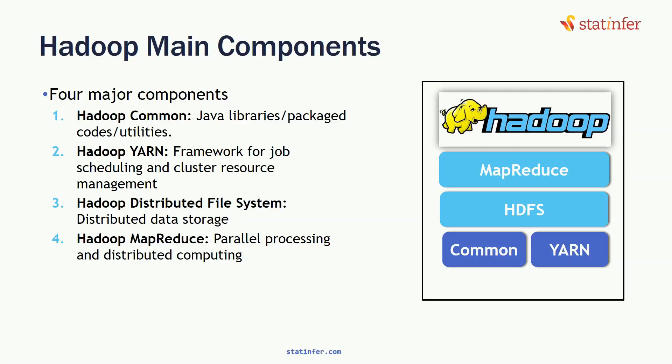Component two is Hadoop YARN, which is for job scheduling and cluster resource management. How do you manage resources? The resource of every computer includes how many cores there are, how much data, hard disk size, and what is the RAM size in each computer in the cluster. Since we are thinking about this from a data scientist point of view, we don't really need to know the programming and coding of this — we should at least know what the major components are.